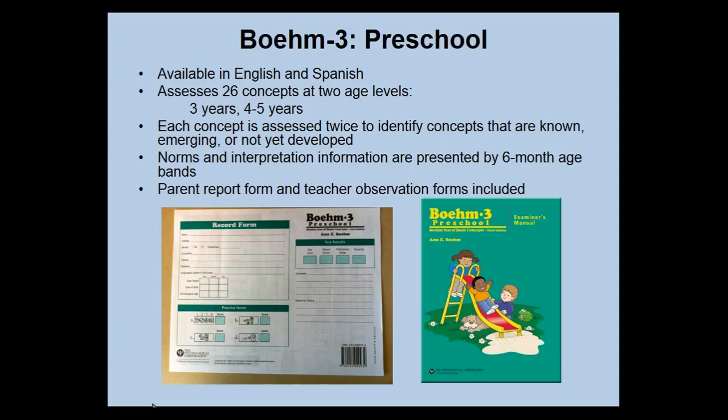The BAME-3 Preschool is available in English and Spanish. It assesses 26 concepts at two age levels: age three, and ages four to five. Each concept is assessed twice in order to identify concepts that are known, emerging, or not yet developed in young children. Norms and interpretive information are presented by six-month age bands. A parent report form and a teacher observation form are also included.